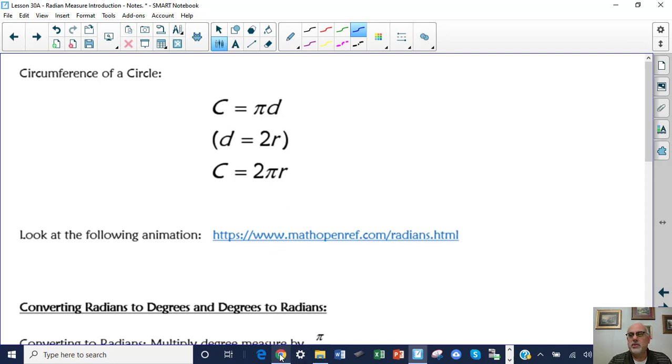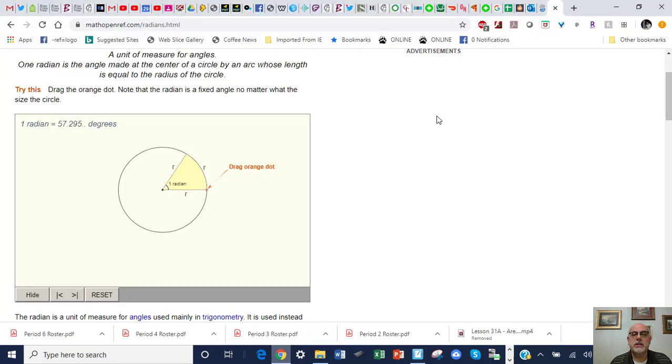So math open reference, where we use the animation for the constructions, they actually have a pretty interesting animation. You have the link for it on your sheet so you can click on that later. All right, so it says one radian is the angle made at the center of a circle by an arc whose length is equal to the radius of the circle.